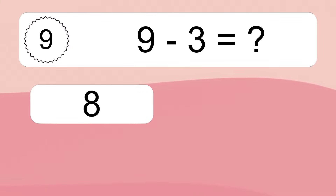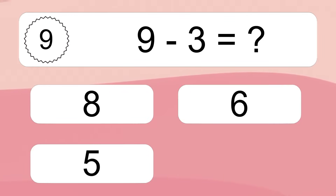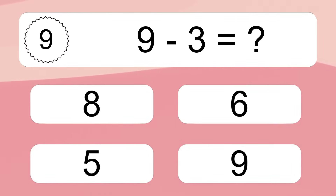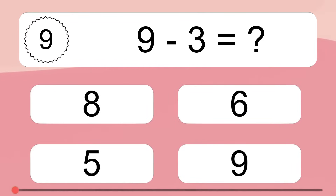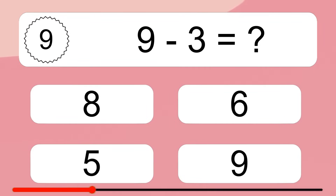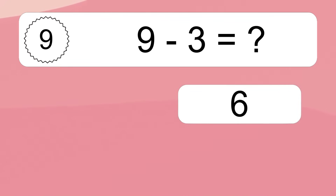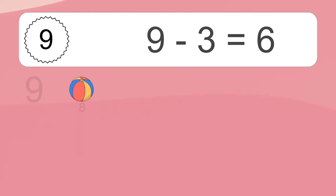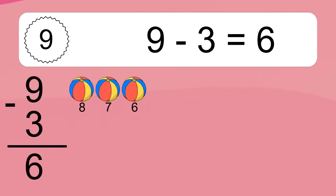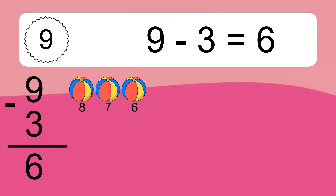9 minus 3 equals what? 9 minus 3 equals 6. Let's count it. 8, 7, 6.